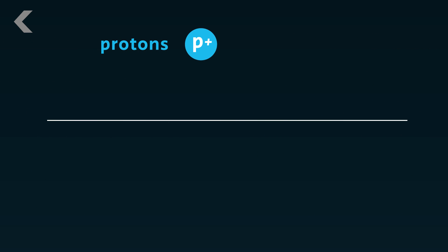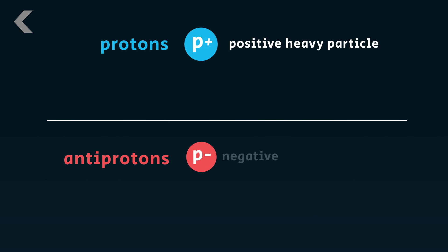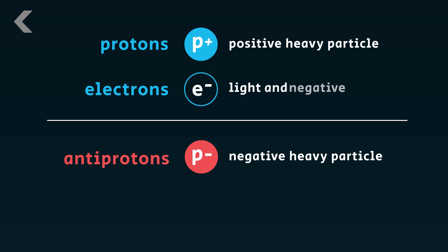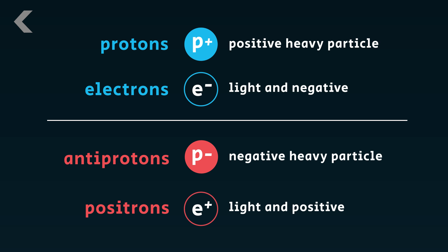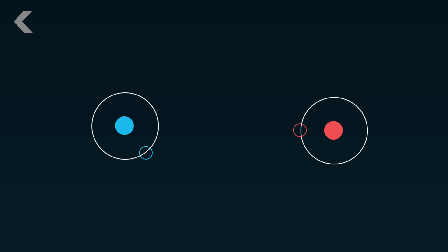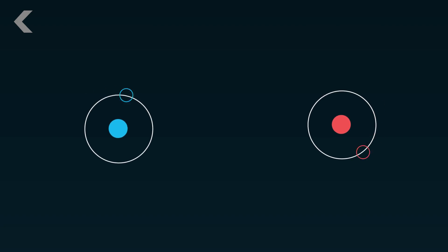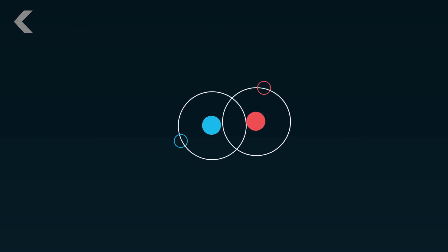A proton is a positive heavy particle. An antiproton is a negative heavy particle. Electrons are light and negative. Positrons are light and positive. Again, because of their oppositeness, if they do touch — boom, gone. But we'll come back to that.